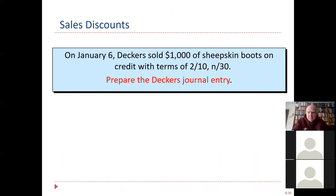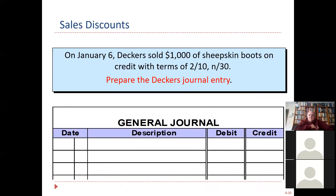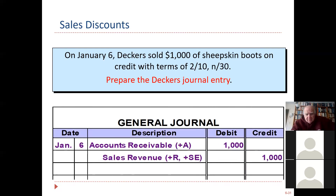Sales discounts — 2/10 net 30 days. You get a 2% discount if you pay within 10 days; otherwise you pay the whole amount at the end of the month. We don't worry about this until we get a check in the mail from a customer. Decker's sold another pair of boots. The credit terms are 2% net 30. We record the sale with a debit to accounts receivable and a credit to sales. Notice there is no reference to the discount in the original journal entry — the discount comes into play when you are paid by the customer.